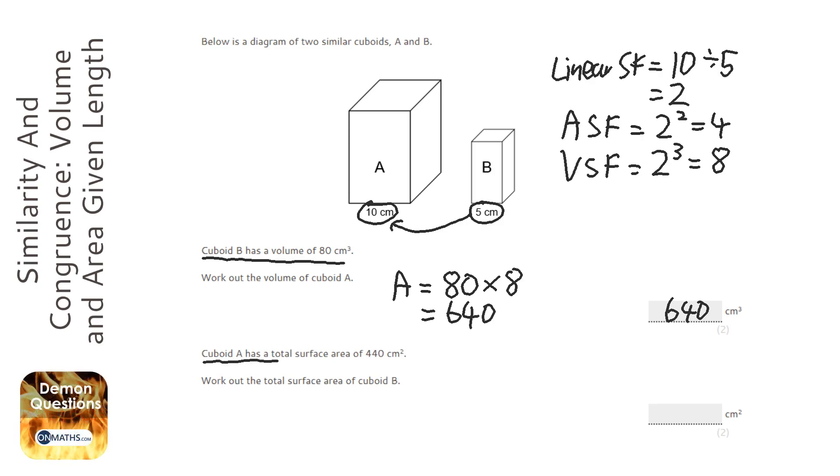This one here, it says cuboid A has a total surface area of 440. So work out the surface area for B. Now, this is surface area this time. So it's going to be 440. Now, because we're going from bigger to smaller, we're going to divide by the scale factor. And it's the area scale factor we need, which is going to be the 4. So we do 440 divided by 4, which is hopefully 110.